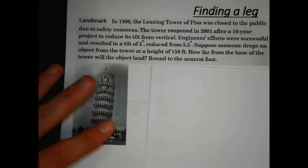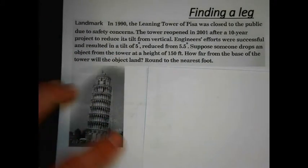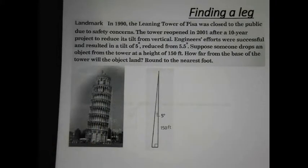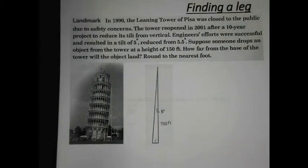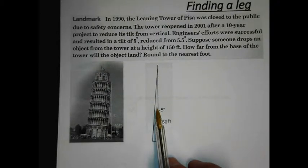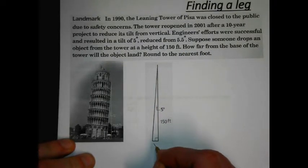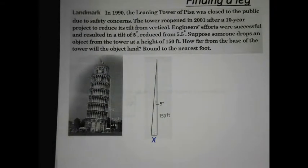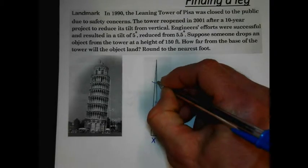We have a diagram of the Leaning Tower of Pisa. The question involves a tilt of 5 degrees and a height of 150 feet. We're looking at a right triangle, because height always means perpendicular to the ground — 150 feet high. There's our angle of tilt. The question is asking how far from the base, so we're going to look for the short leg right there. The angle in question is 5 degrees, up here at the top.